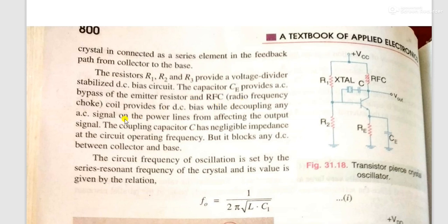Radio frequency choke, RFC, is provided for DC bias while decoupling any AC signal on the power line from affecting the output signal.